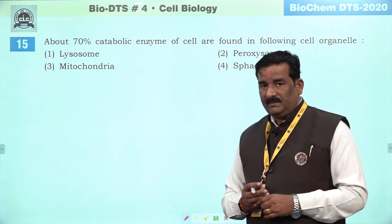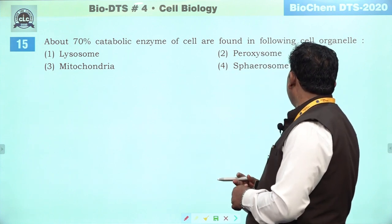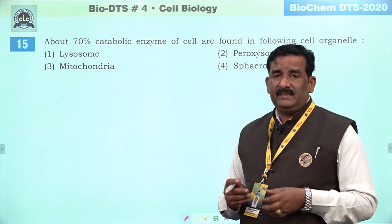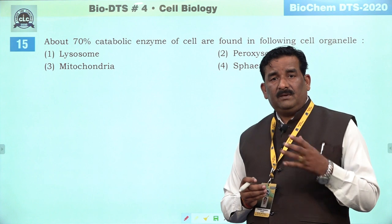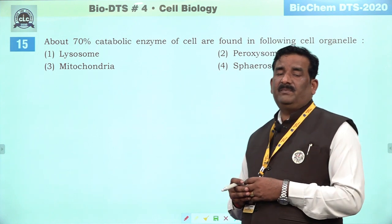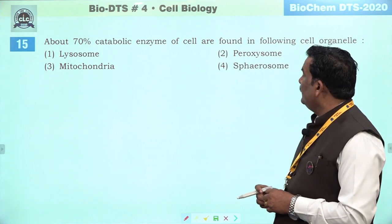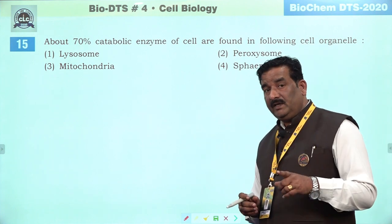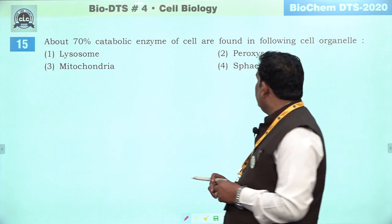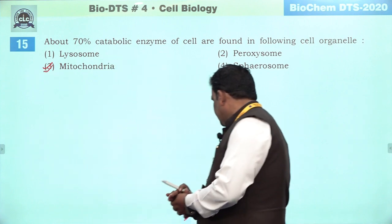Next question: about 70 percent catabolic enzyme of cell are found in following cell organelle. Yeh achha question hai — mitochondria par based hai. Kyunki catabolic enzyme mitochondria mein hain, aur jo catalytic reaction mein participate karti hain, specially Krebs cycle mein. Isliye ham mitochondria ko enzyme bag ke naam se bhi jaante hain. Third is the right answer.